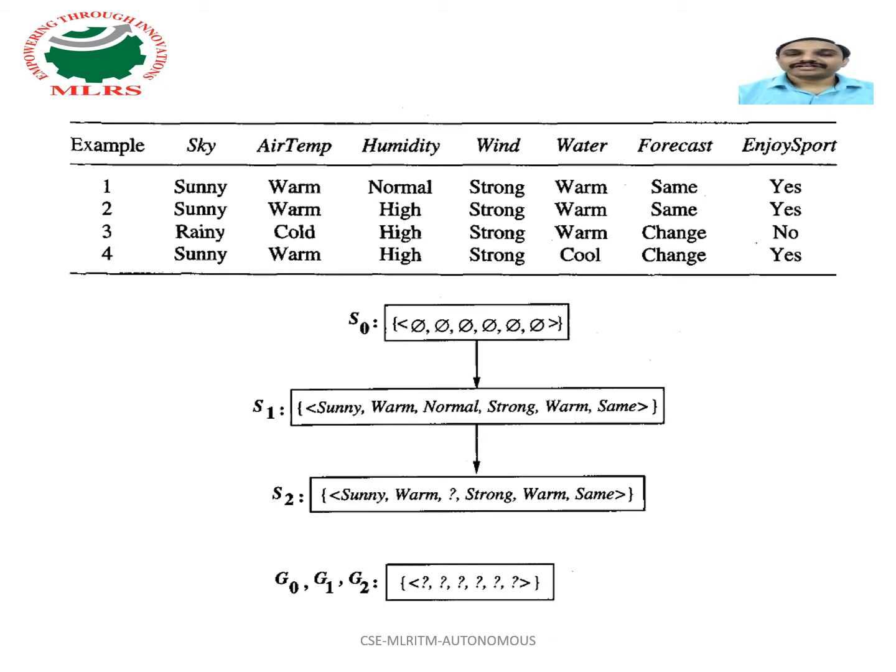Here we have three positive examples and one negative example. Three positive examples are where we can enjoy sport, and the negative example is no. This algorithm starts by considering most general hypothesis G0 and most specific hypothesis S0 as boundaries.